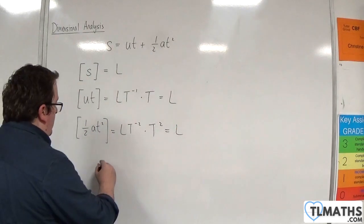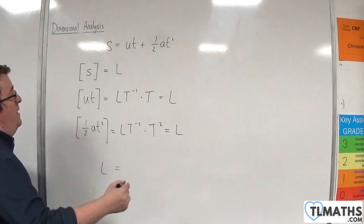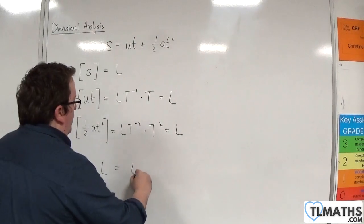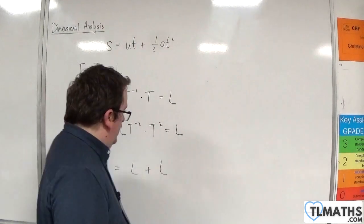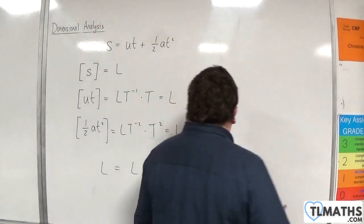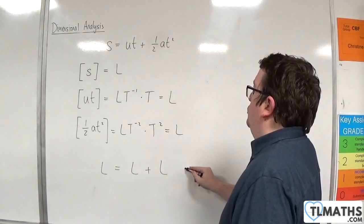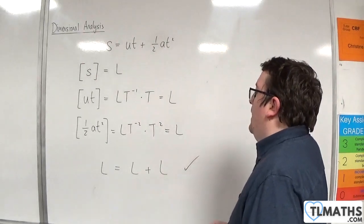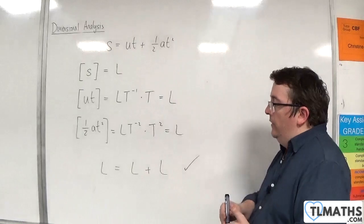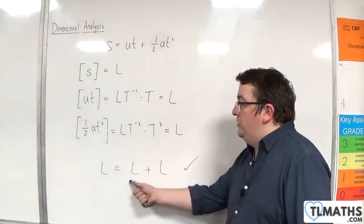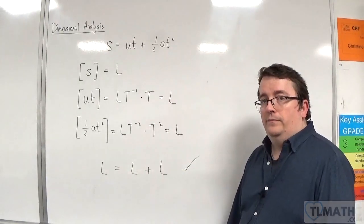So on the left-hand side we have a length, and on the right-hand side we've got a length plus a length. It is just showing that it is dimensionally consistent to add two lengths together to get another length.